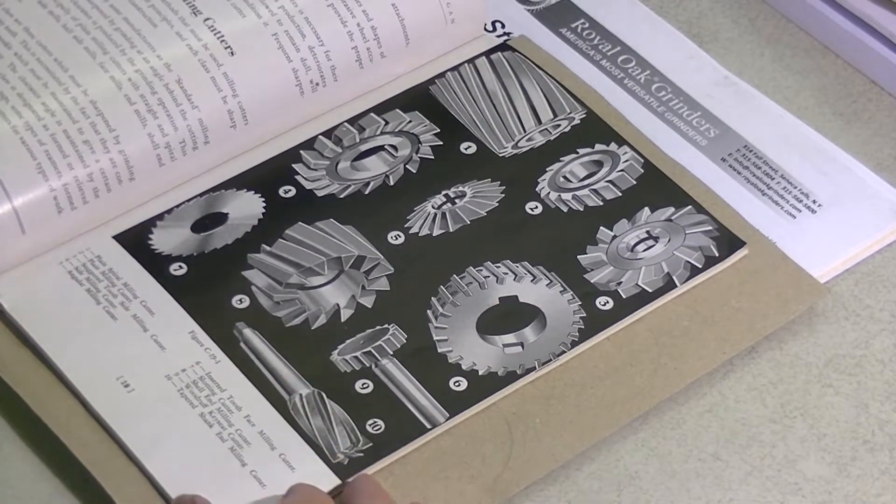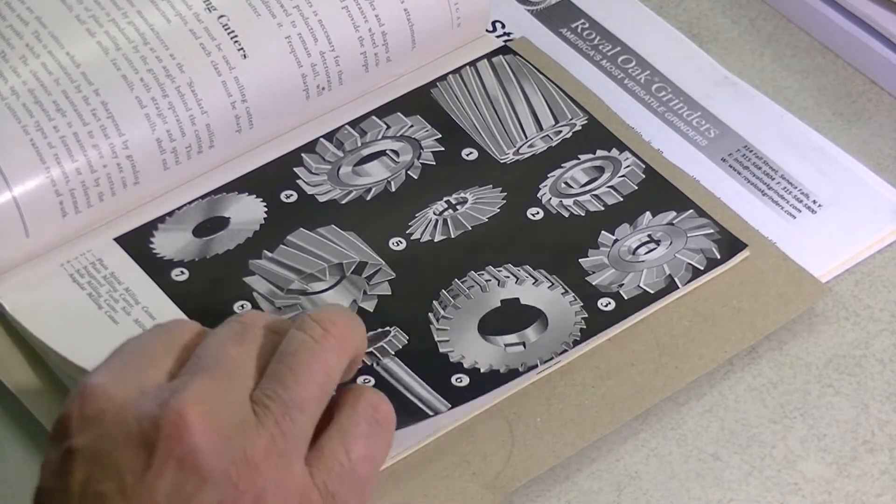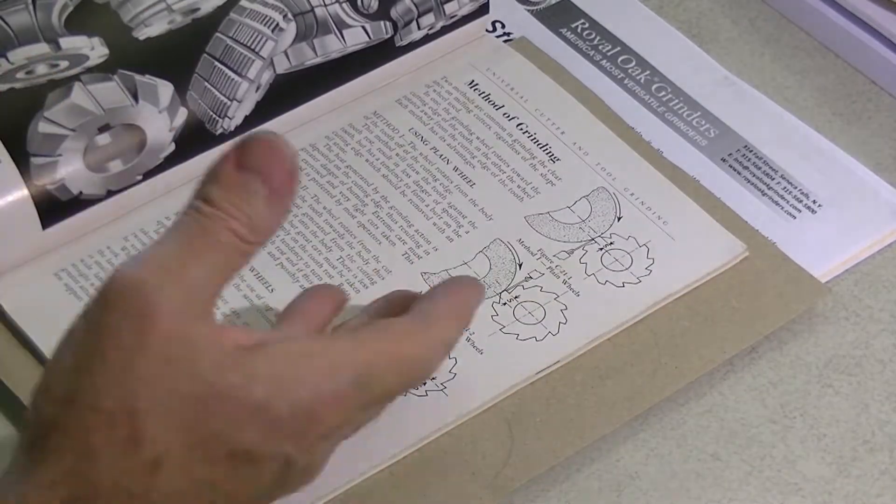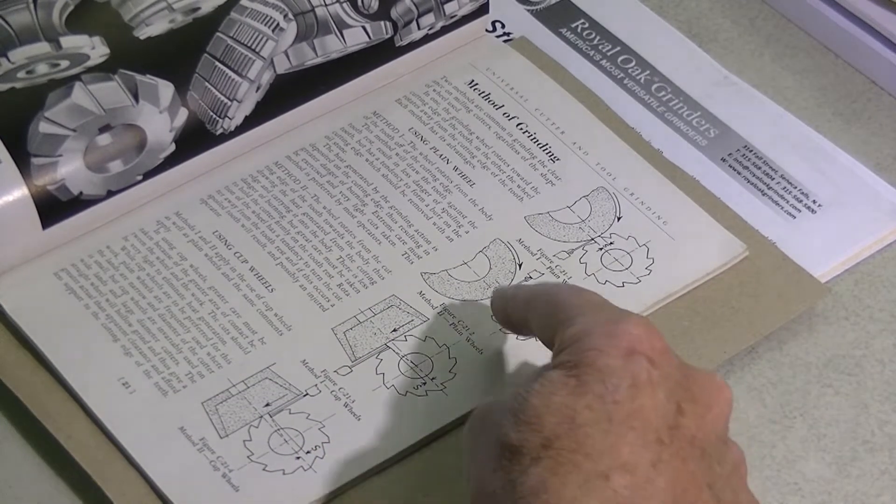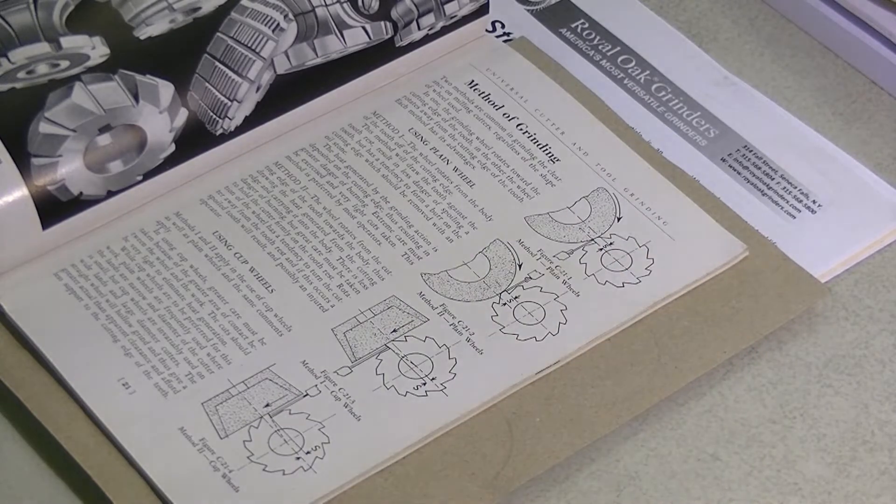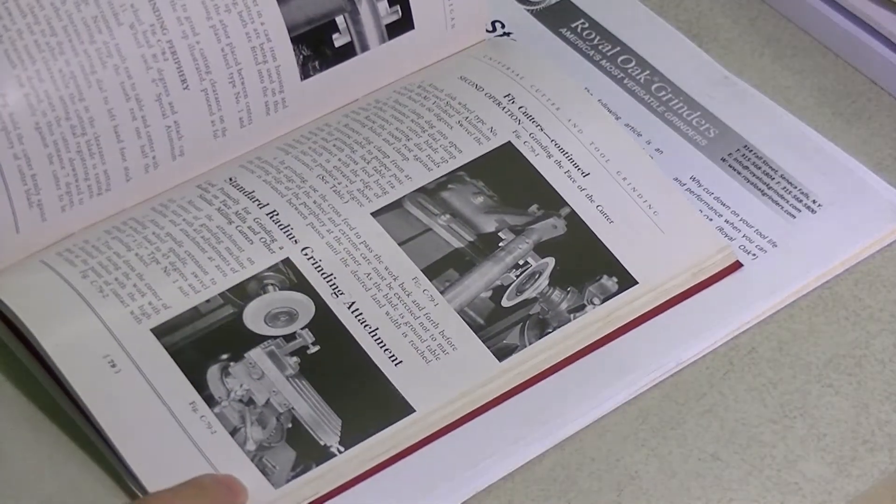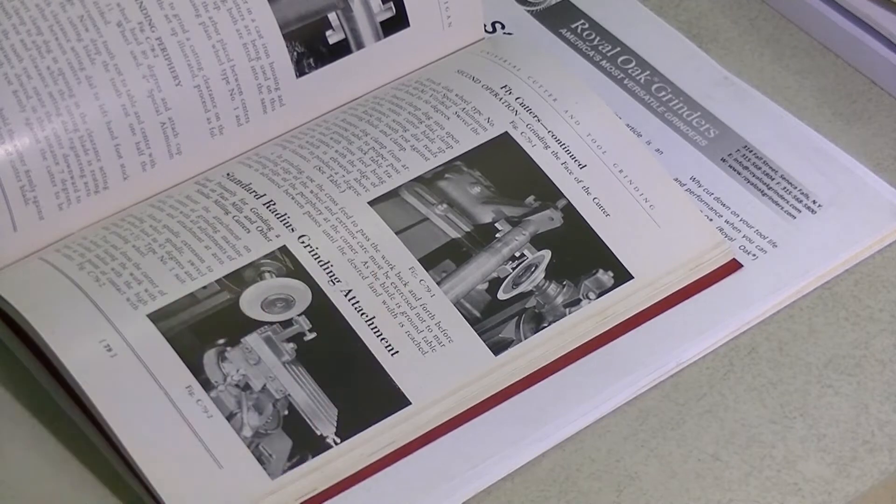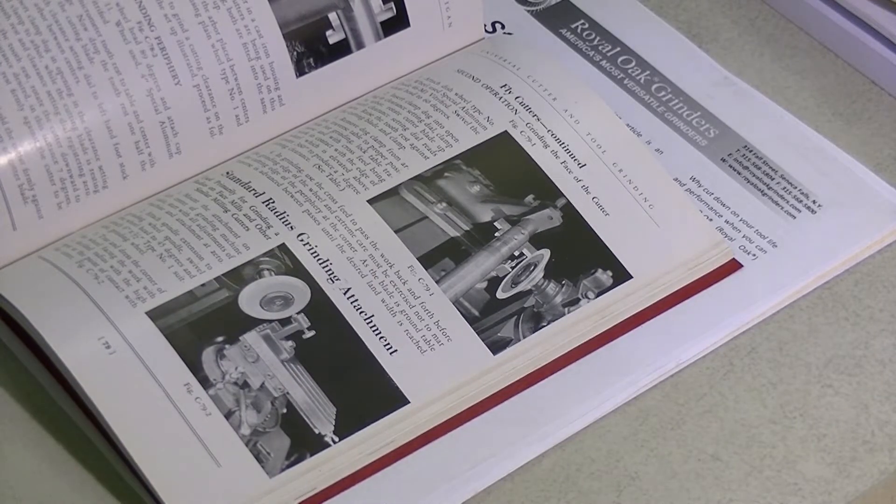Another thing they give you is a good rundown on what grinding wheels to use and where they're used, methods of grinding. And this shows you how to set the wheel up to get the required clearance in a couple of different ways. Excellent book. And towards the back it gives you actual setup for grinding several different cutters. That was a bargain.